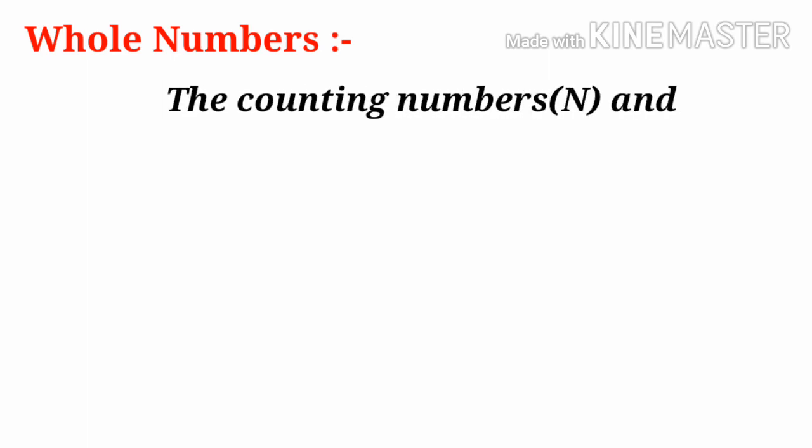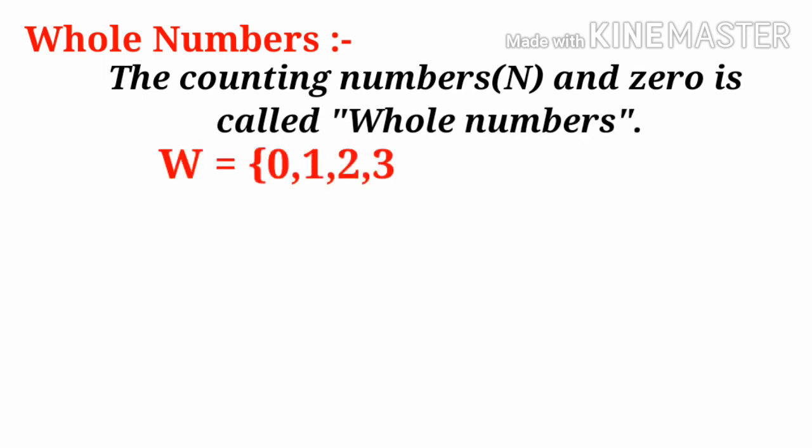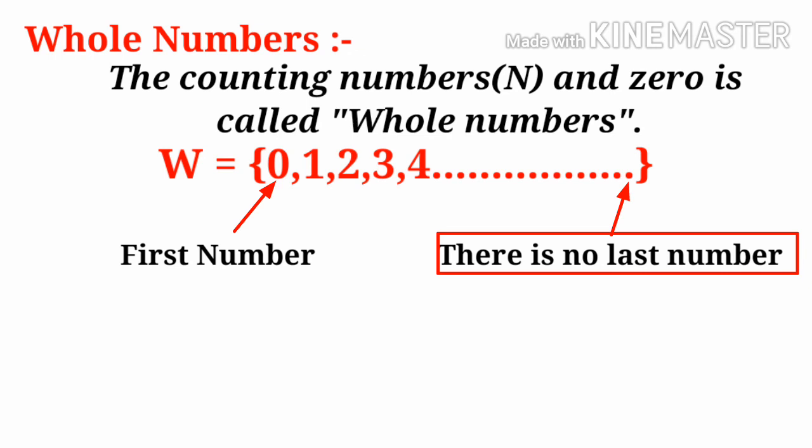Now let us know about whole numbers. The counting numbers, which we already denoted by capital N, and 0 is called whole numbers. Whole numbers are denoted by W equals 0, 1, 2, 3, 4, and so on. There is no end. So here first number is 0 and there is no last number. It is endless.